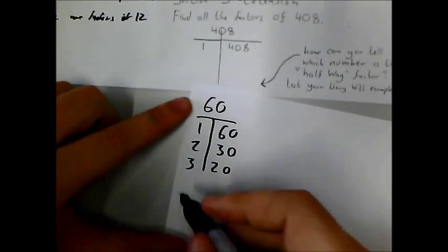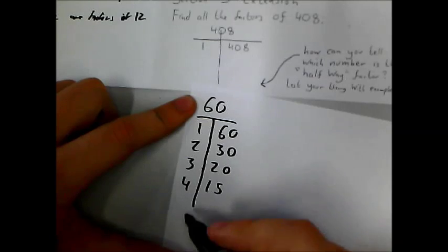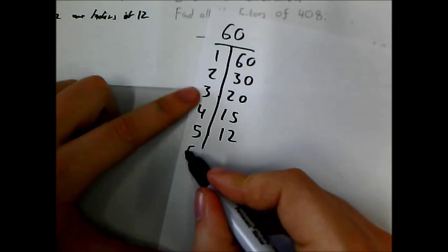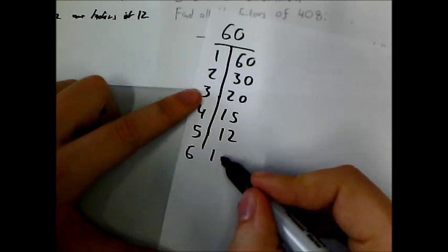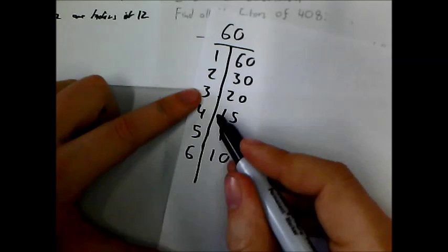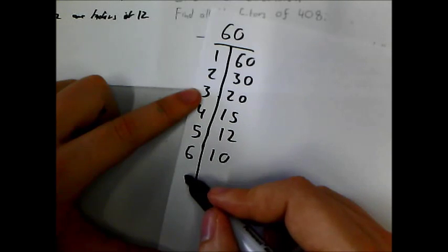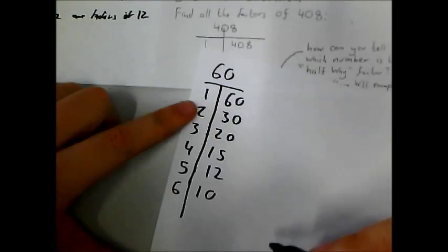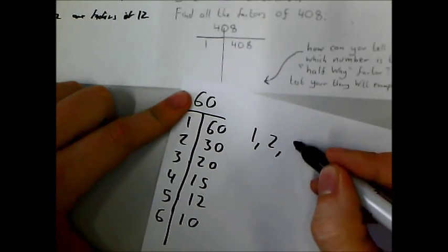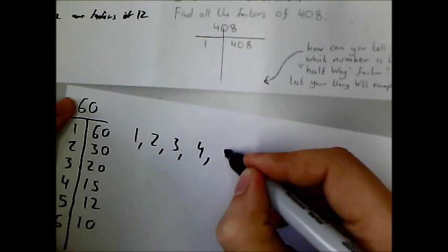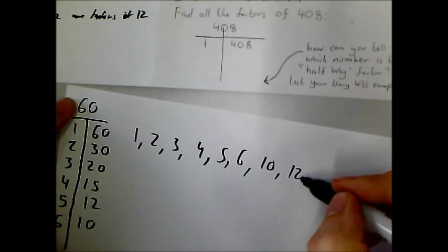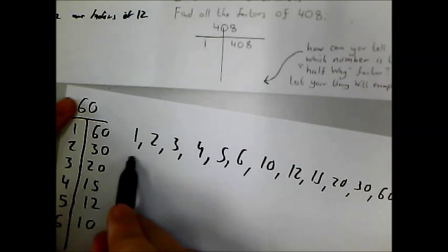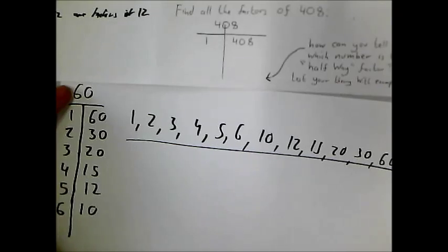4 and 15. 5 and 12. 6 and 10. 7 doesn't go into it. 8 doesn't go into it. And 9 doesn't go into it. So I found all of them. So my factors are 1, 2, 3, 4, 5, 6, 10, 12, 15, 20, 30, and 60.